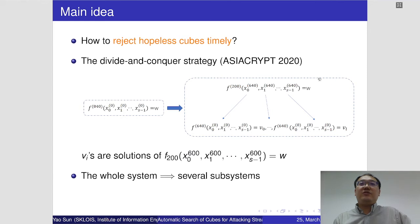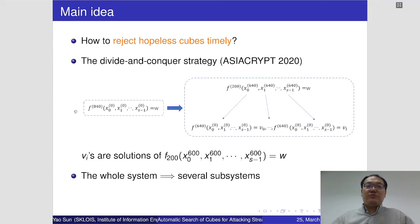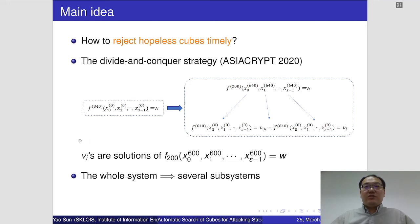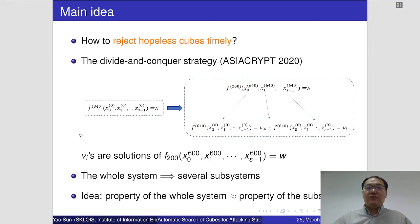To reject hopeless cubes timely, we can use the divide and conquer strategy proposed in 2020. The idea is simple: since we want to solve a big system, we can split it into several small subsystems and solve them one by one, accumulating the results. By using this divide and conquer strategy, we can determine whether a cube is hopeless with a high probability after computing only a few subsystems. We observed that the property of the whole system approximately equals the property of the subsystem.